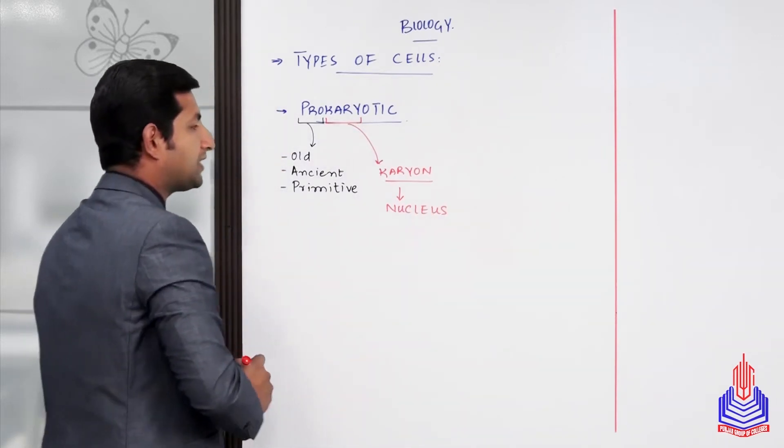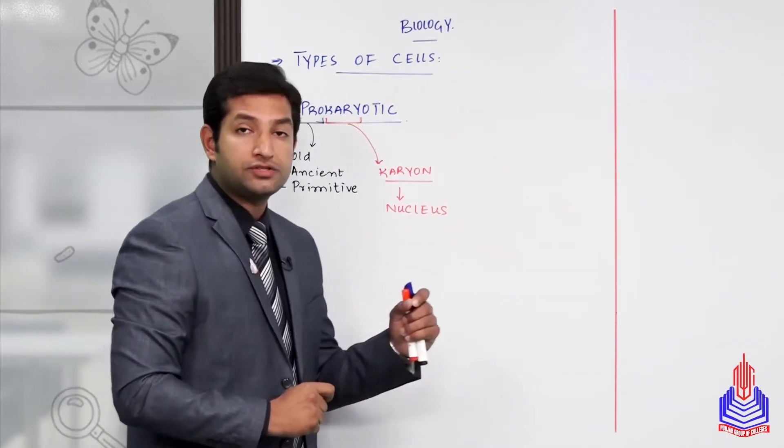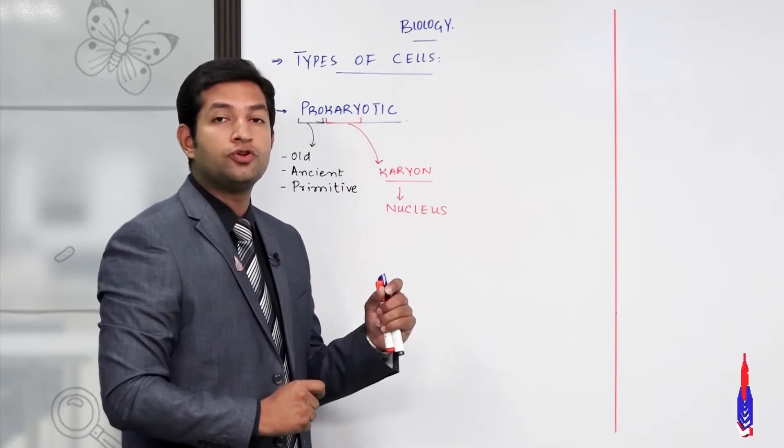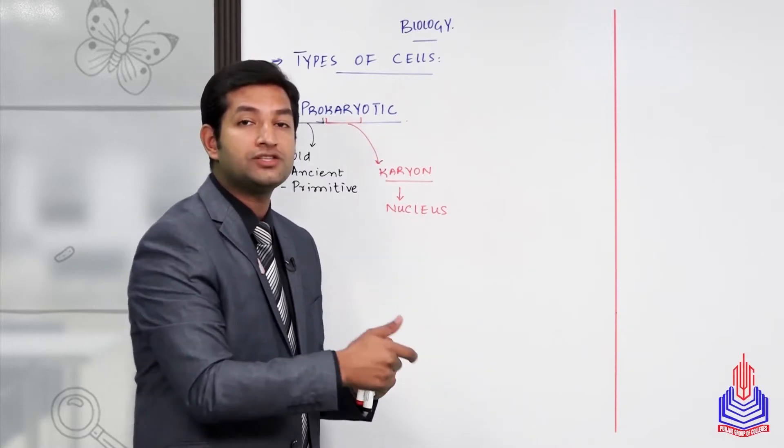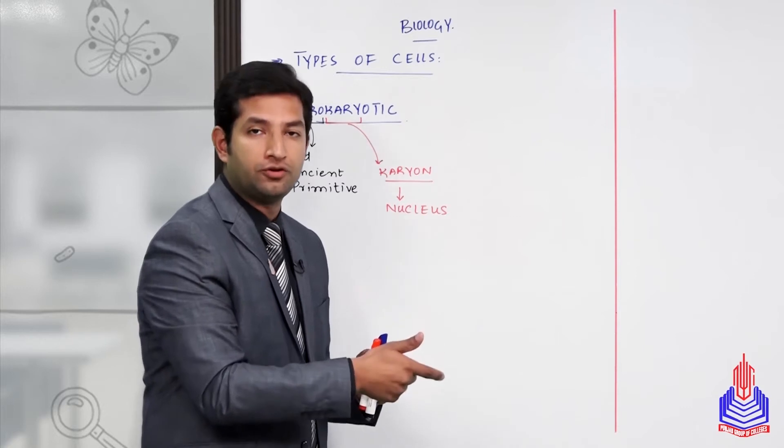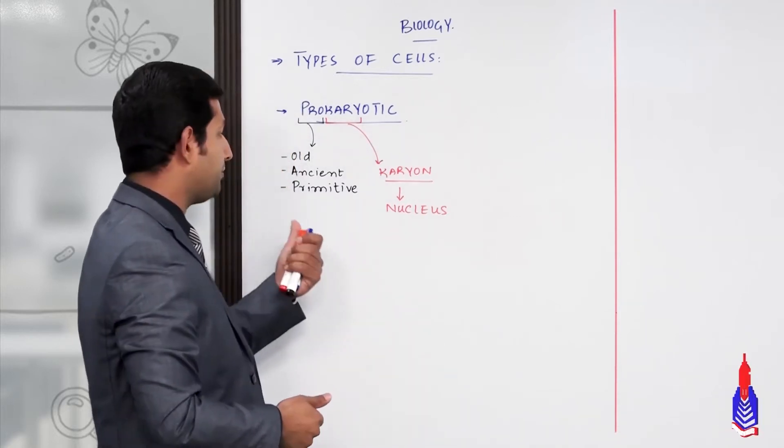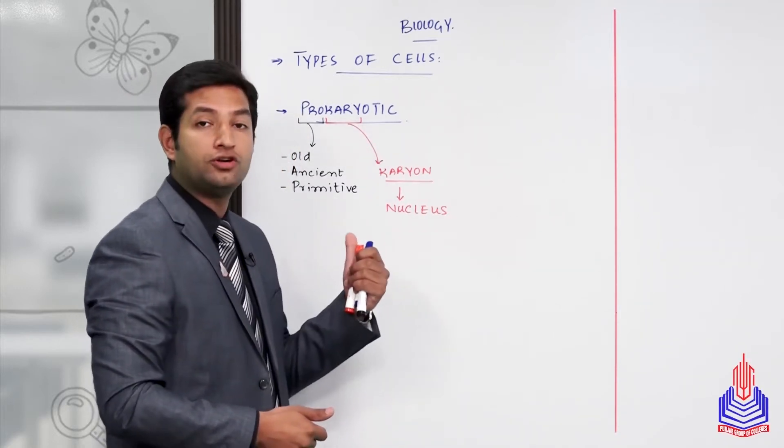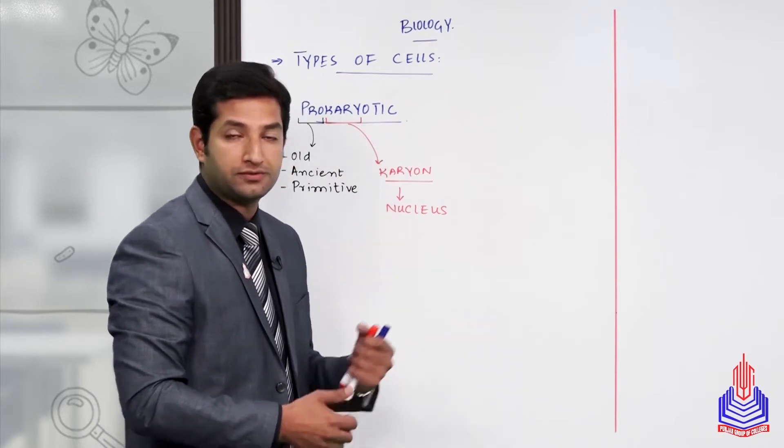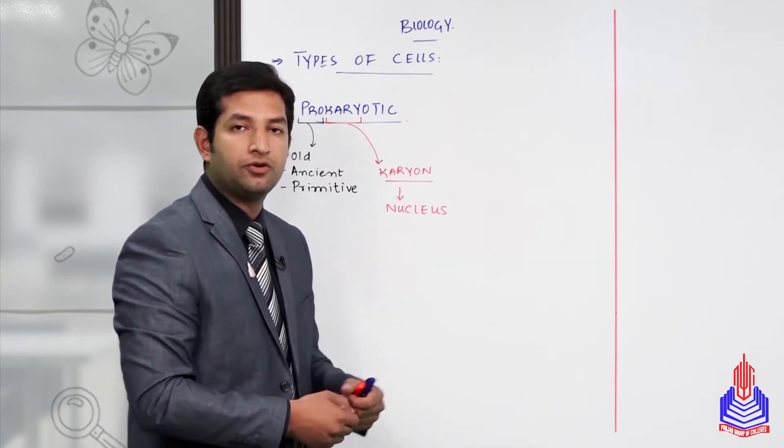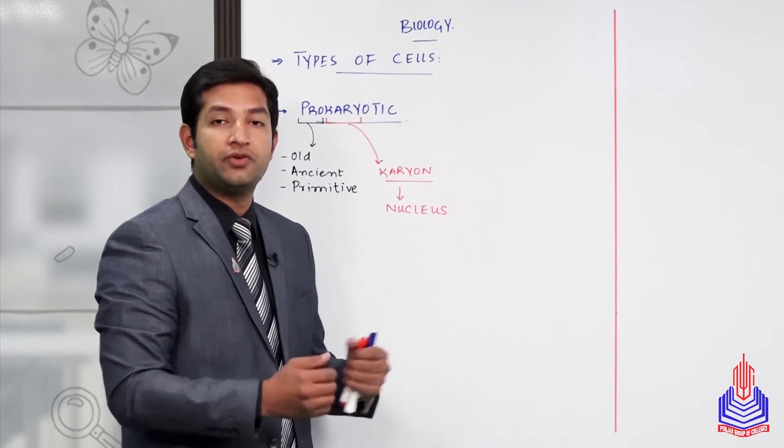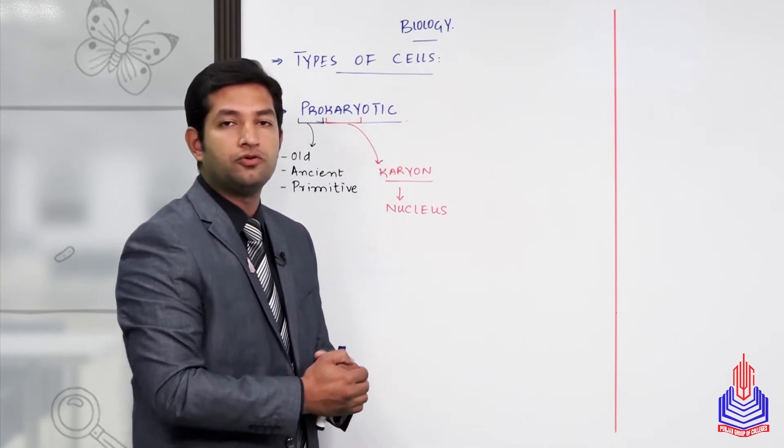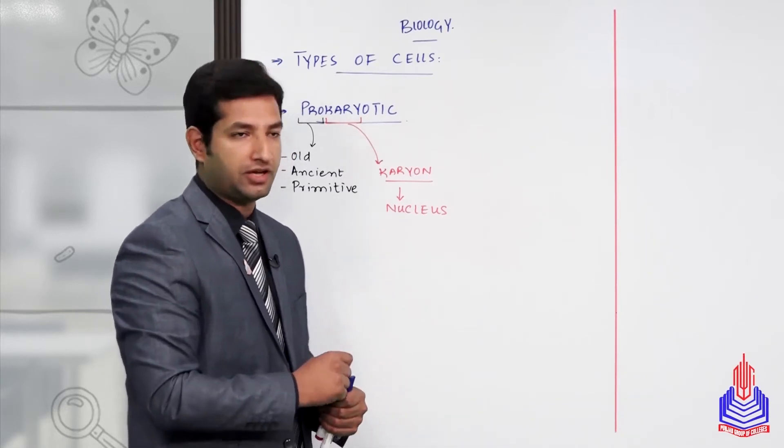So the meaning becomes clear: those cells which do not possess an advanced, definite, or true nucleus contain a primitive or ancient type of nucleus - an old type of nucleus without any nuclear envelope. This is the primitive nucleus type.